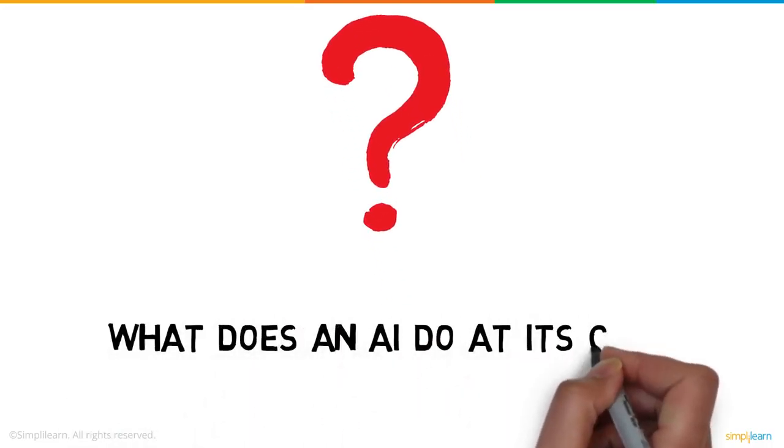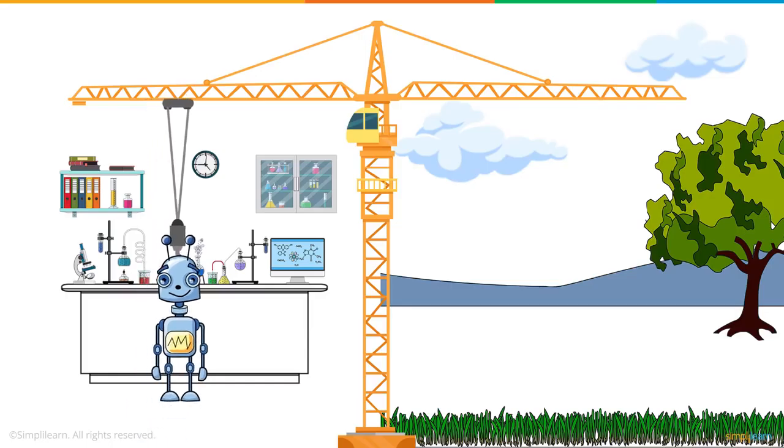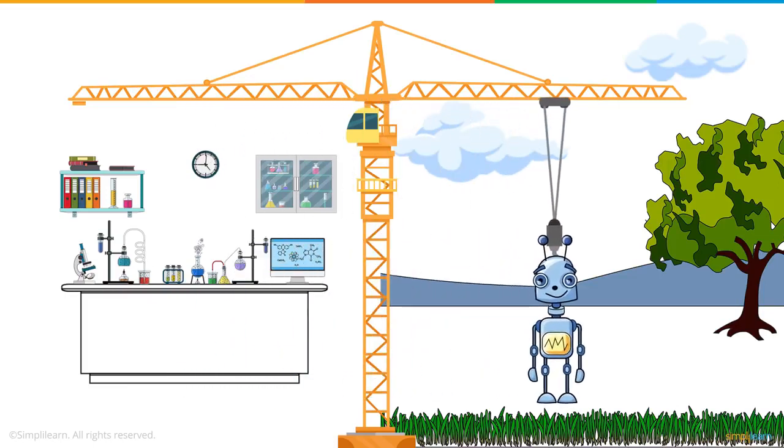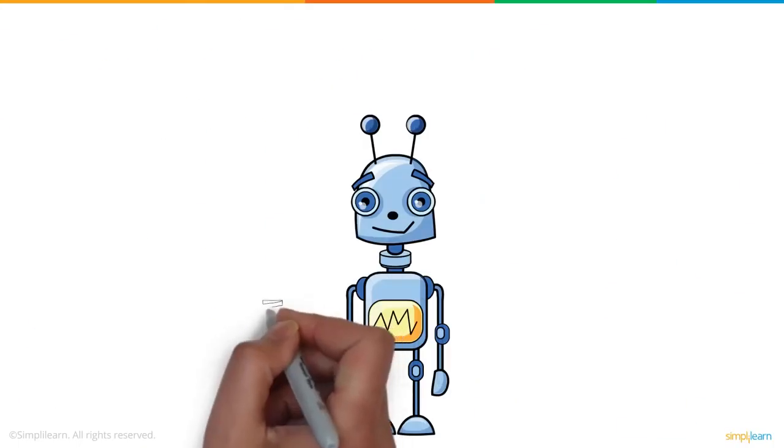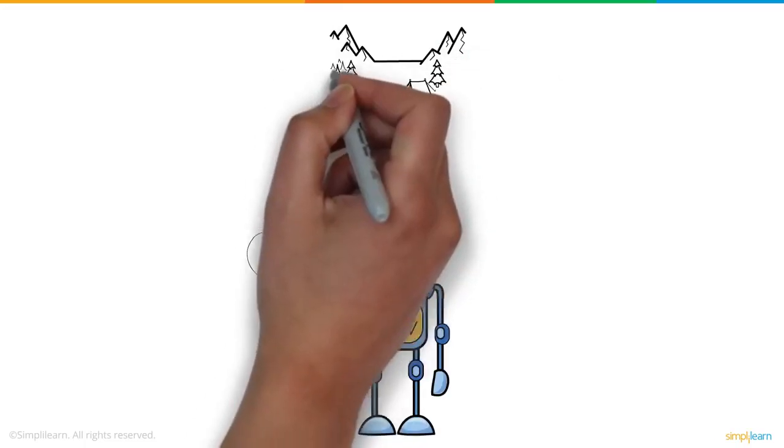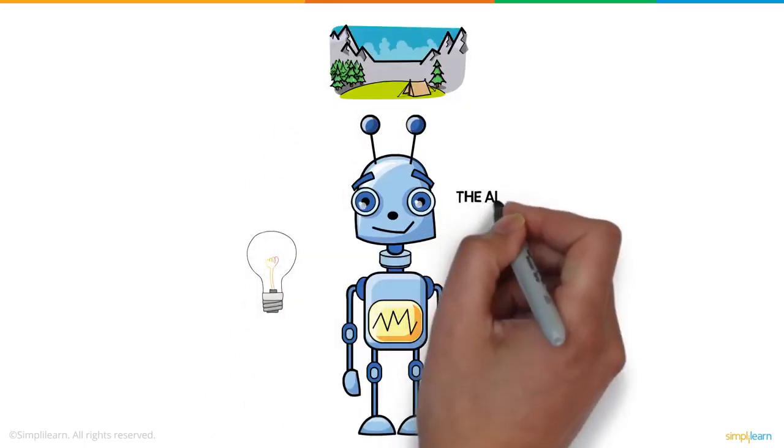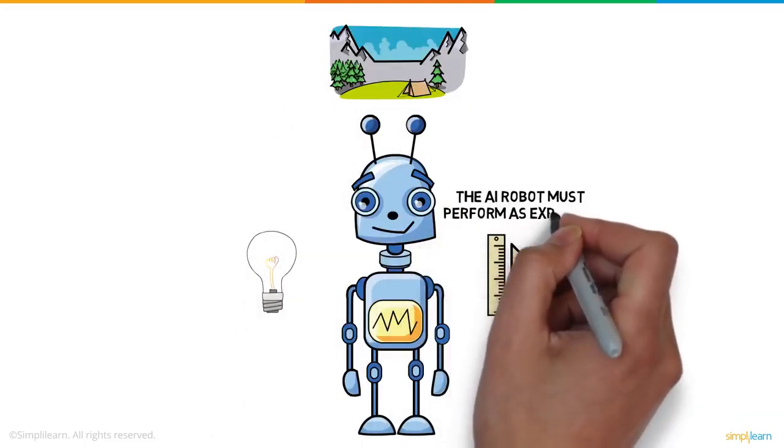The real question is, what does an AI do at its core? Here is a robot we built in our lab, which is now dropped onto a field. In spite of variation in lighting, landscape, and dimensions of the field, the AI robot must perform as expected.